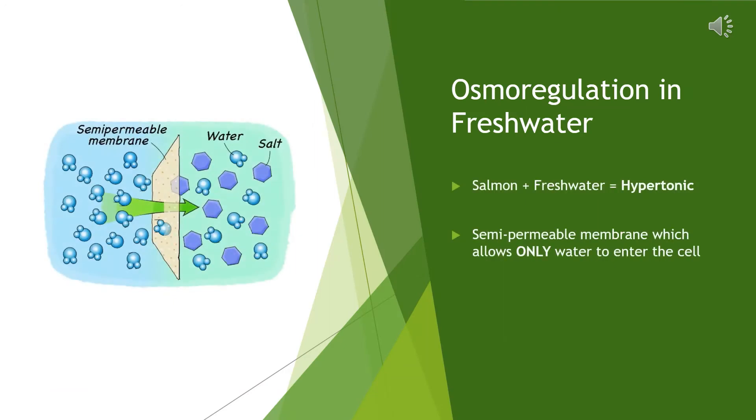Osmoregulation in freshwater. While salmon are in freshwater, the fish are hypertonic to their surroundings. This tells us that their cells have a higher solute concentration than their surroundings.